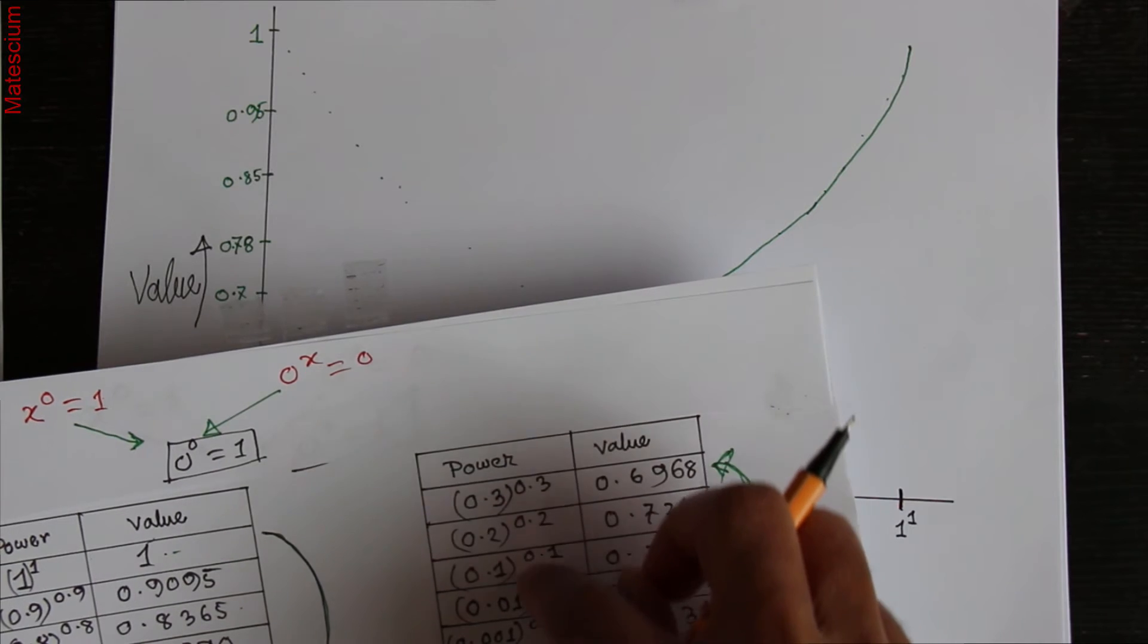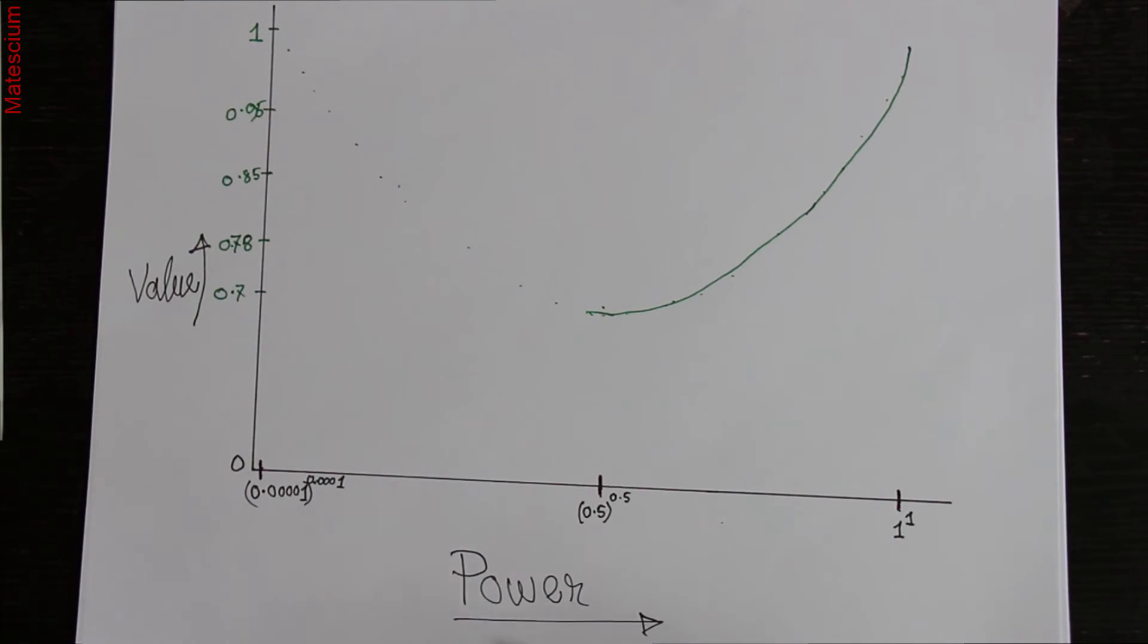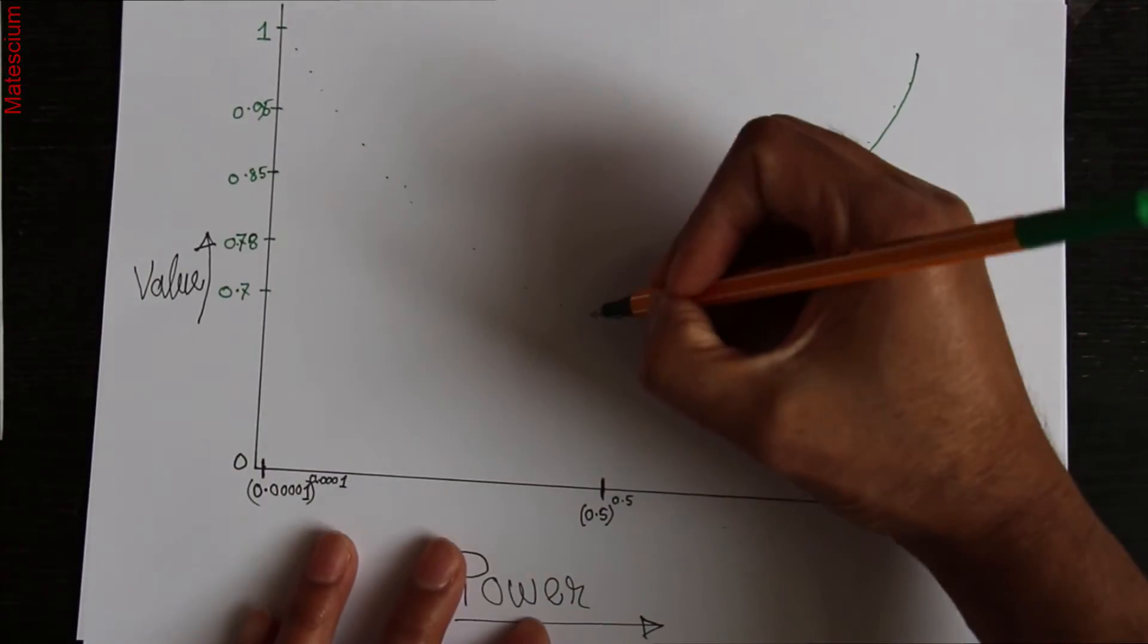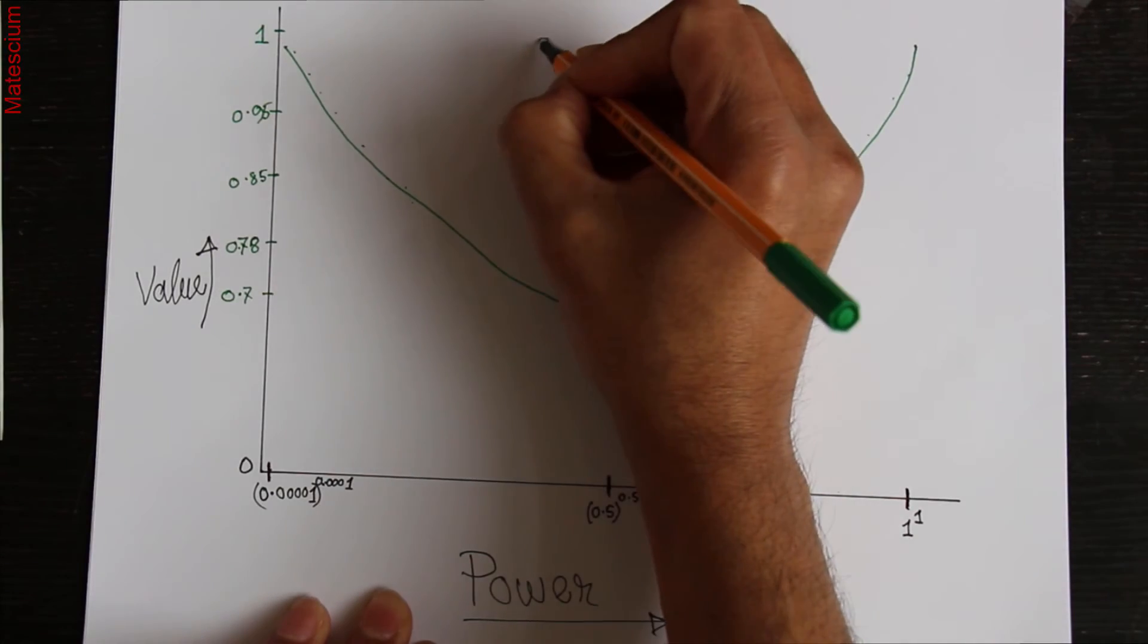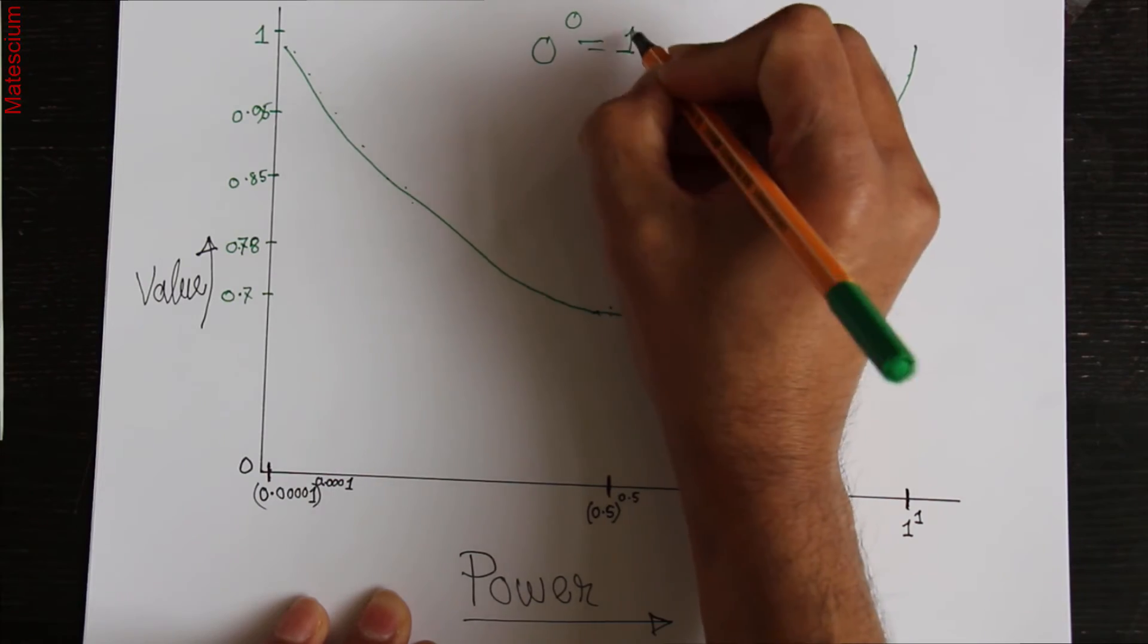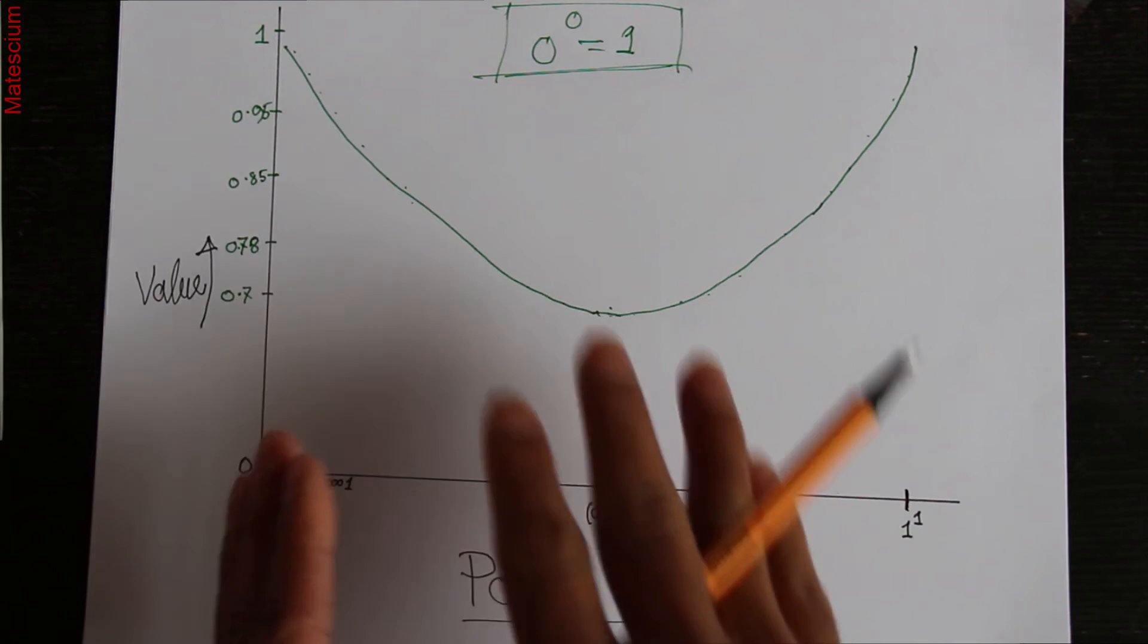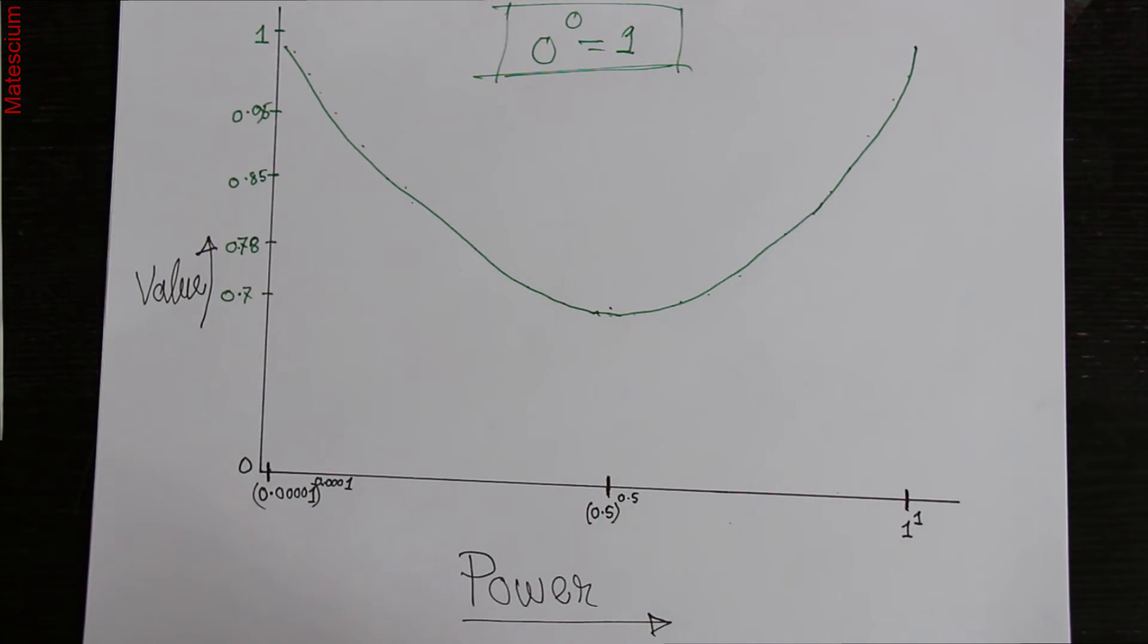I am decreasing, decreasing. And interestingly, this value is increasing. That means it is increasing like this way. That means this is the graph of 0 to the power 0 equals 1. I hope you understand what exactly happens, what's the reason behind 0 to the power 0 equals 1.